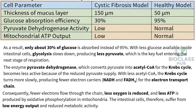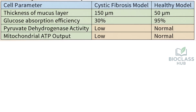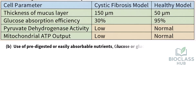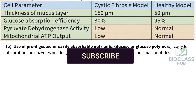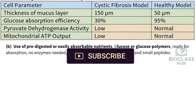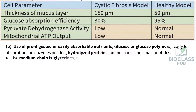Part B. Use of predigested or easily absorbable nutrients: glucose or glucose polymers, ready for absorption with no enzymes needed; hydrolyzed proteins — amino acids and small peptides. Use medium-chain triglycerides or predigested lipids, which are absorbed without pancreatic lipase.